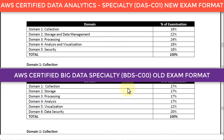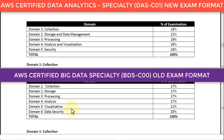Right off the bat you'll notice five domains in the new exam versus six domains in the old exam. Data Security was the sixth domain in the old exam, whereas it is simply Security as domain 5 in the newer examination. The percentages are also listed: storage and data management is 22%, processing is 24%, analysis and visualization is 18%, and security is also 18%. The old exam covered the machine learning process basics — collection, storage, processing, analysis, visualization, then security.